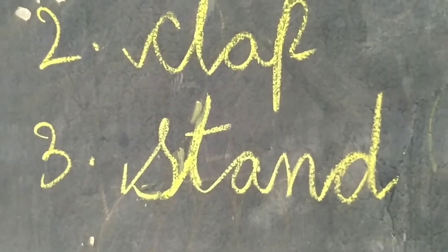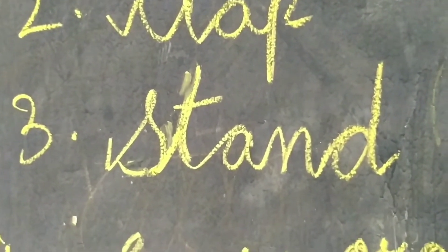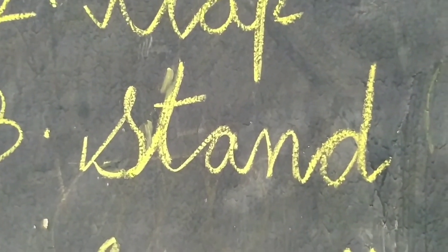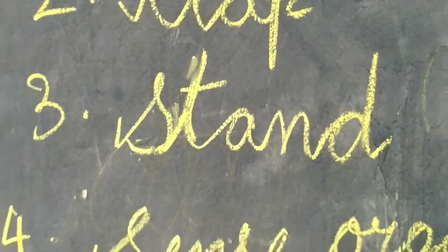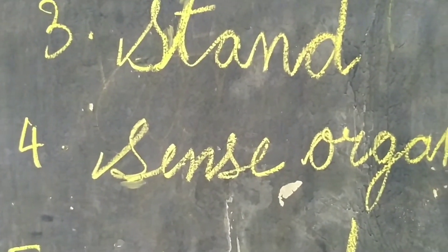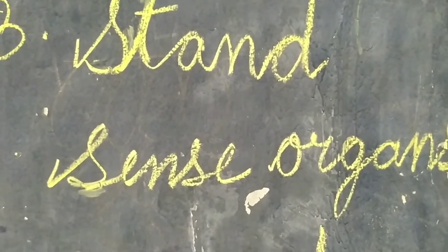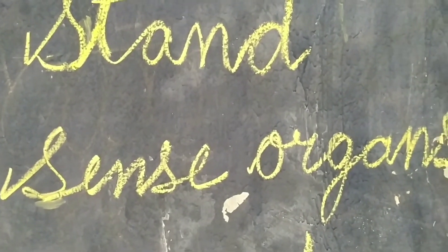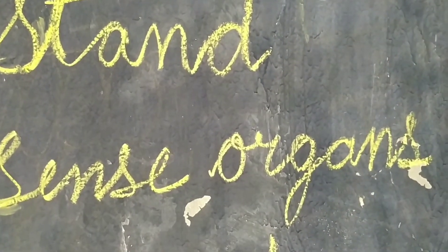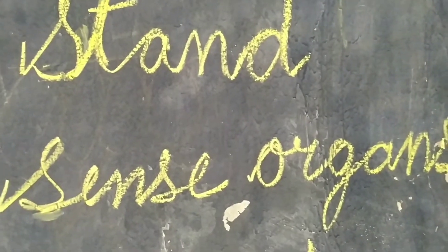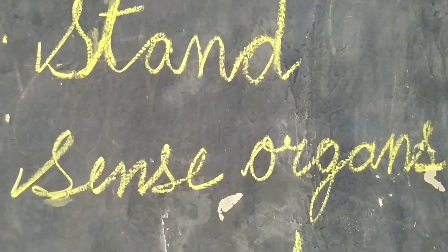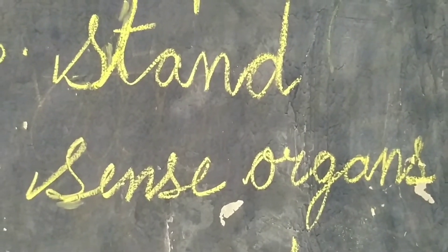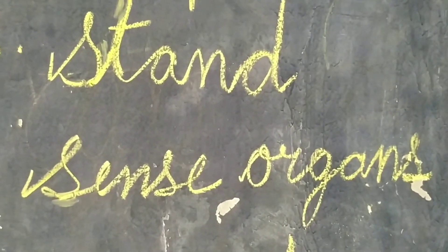Third one: S-T-A-N-D. Stand. Fourth one: S-E-N-S-E — sense. O-R-G-A-N-S — organs. Sense organs. When you are writing, children, see and write. Read the spelling and write down in your notebook.